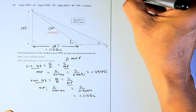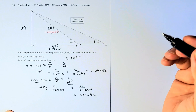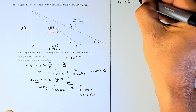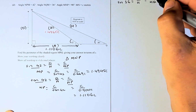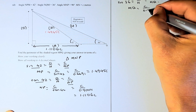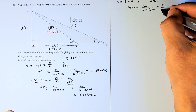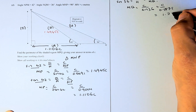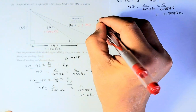Now we look at the bigger triangle MNQ. We are going to use sine 36. MQ is the hypotenuse, so sine 36 equals opposite over hypotenuse, where the opposite is still C and the hypotenuse is MQ. So MQ equals C divided by sine 36. Sine 36 is 0.5878, so MQ equals 1.7013C. That answer is required for the perimeter, so we put it in red: 1.7013C.